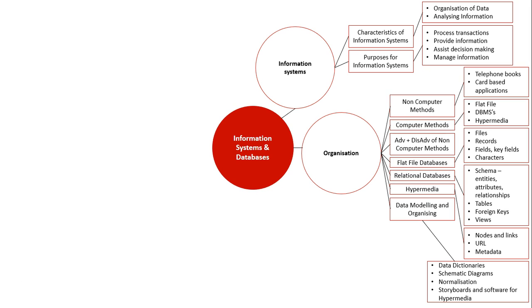This is used to achieve normalisation — when we take a flat file database with redundant data and poor integrity and split it into multiple tables. Data only has to be entered into these tables once and can then be referenced later, ensuring consistency and improving integrity. Storyboards are also created to show hypermedia and its navigation.